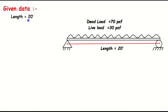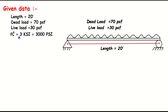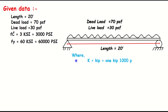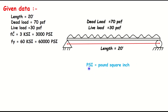Given data: length = 20 feet, dead load = 70 lbs per square feet, live load = 30 lbs per square feet, fc' = 3 ksi, fy = 60 ksi. Here fy is the yield strength of steel and fc' is the compressive strength of concrete. One kip equals 1000 pounds, and ksi means kips per square inch.